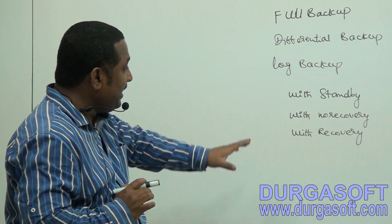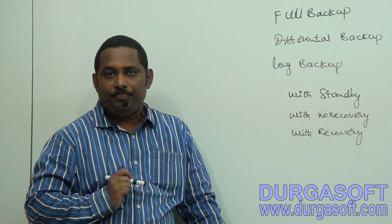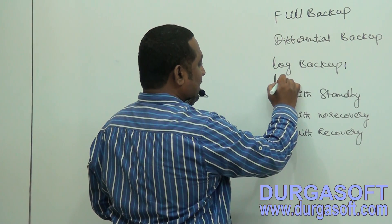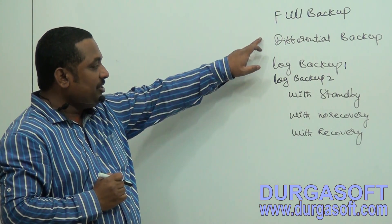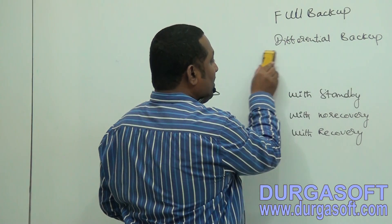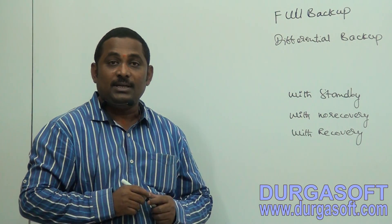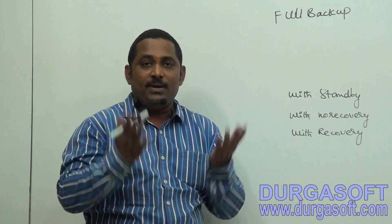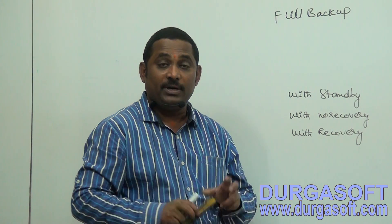Irrespective of the type of backup, whatever the final backup file is, for that only go for WITH RECOVERY. For example, if you have log backup 1 and log backup 2: full backup — WITH NO RECOVERY, differential backup — WITH NO RECOVERY, log backup 1 — WITH NO RECOVERY, log backup 2 — WITH RECOVERY. Similarly, if you have only full backup and differential backup: full backup — WITH NO RECOVERY, differential backup — WITH RECOVERY. And if you have only full backup, then for full backup only, go for WITH RECOVERY, because there is only one backup file. This is the restore concept and we have to follow restore modes when working with it.